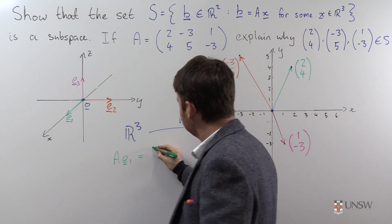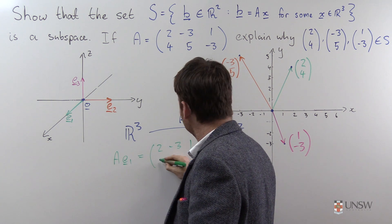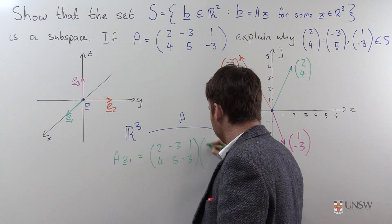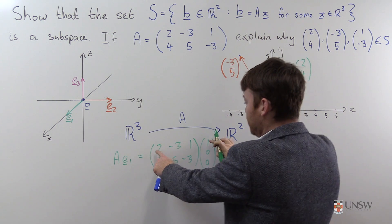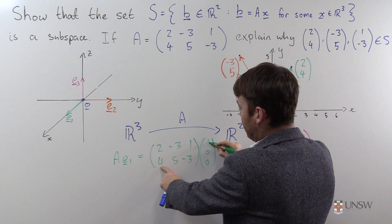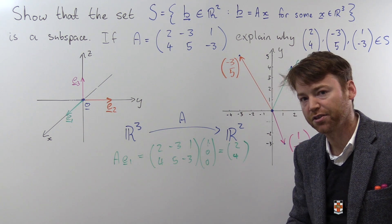So A of the standard basis vector E1 is equal to, well if I apply A to this matrix, then I get 2, negative 3, 1, 4, 5, negative 3, I'll just do the first one, 1, 0, 0, and that's equal to 2 plus 0 plus 0, and 4, 0, 0, so 2, 4, the first column of A.